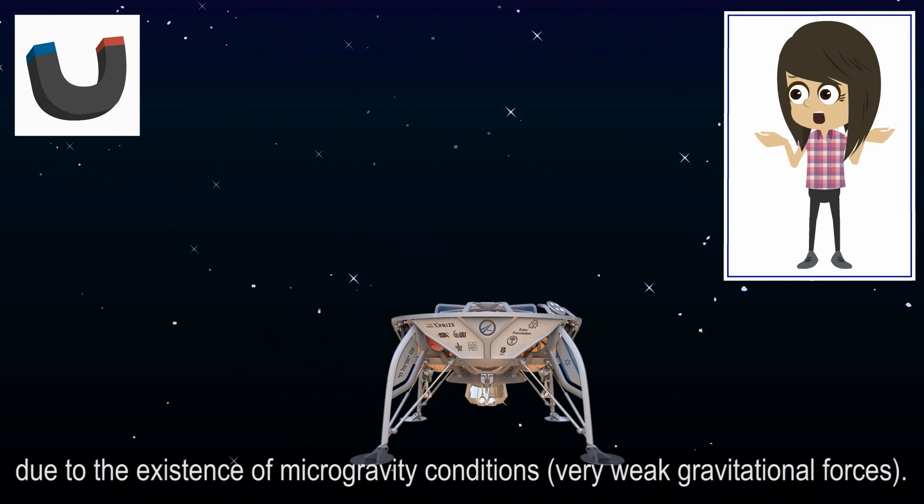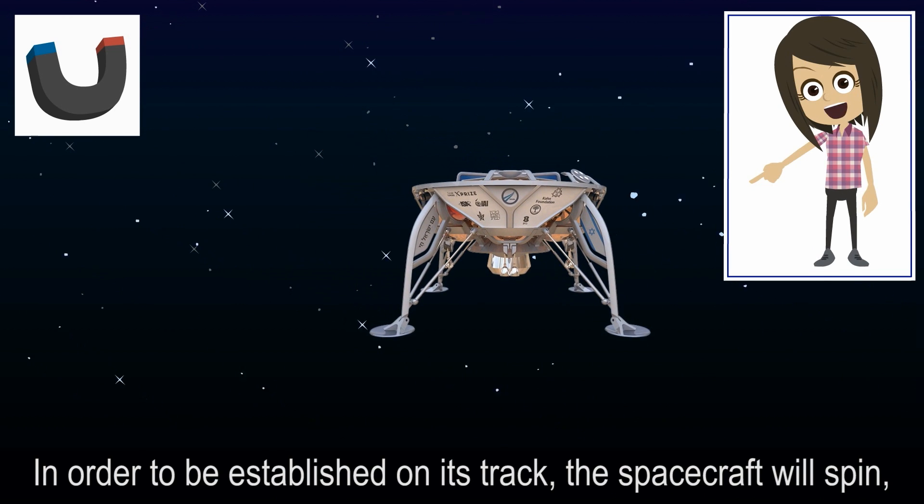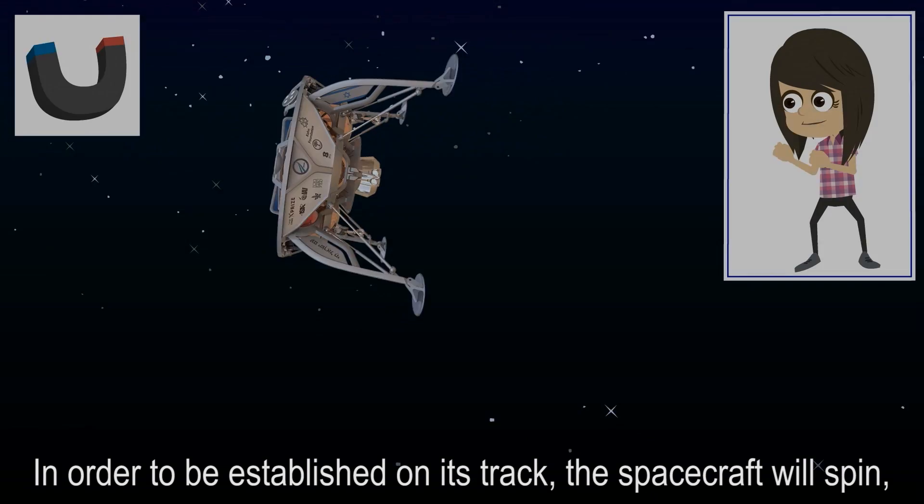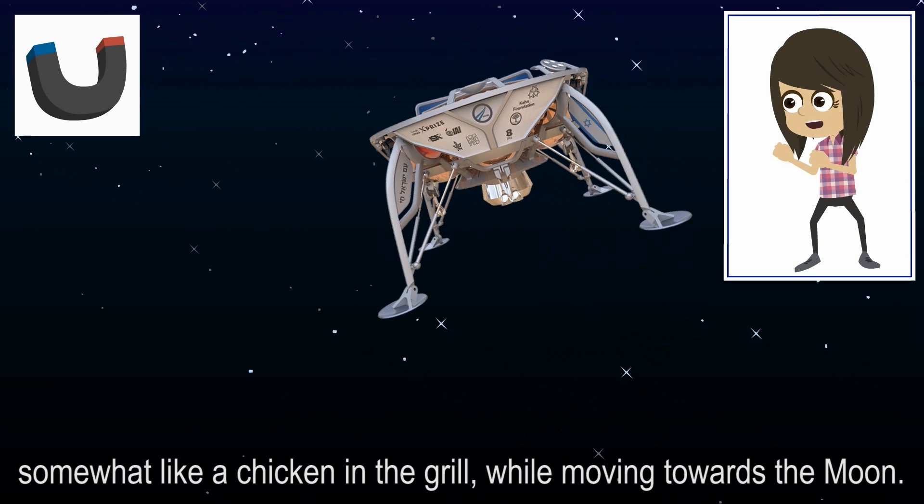Movement in space is different than on Earth, due to the existence of microgravity conditions, very weak gravitational forces. In order to be established on its track, the spacecraft will spin, somewhat like a chicken in the grill, while moving towards the moon.